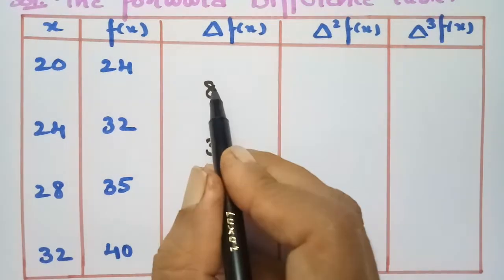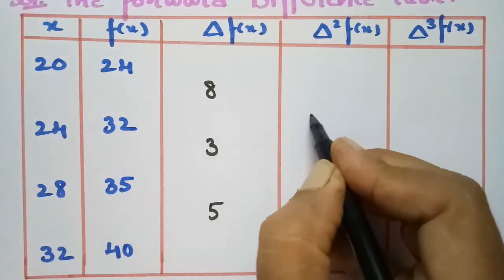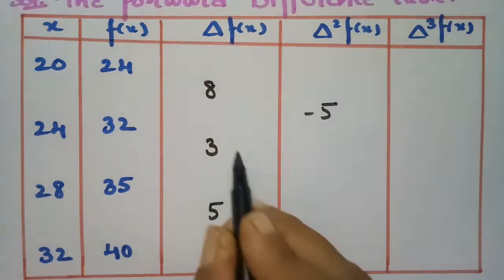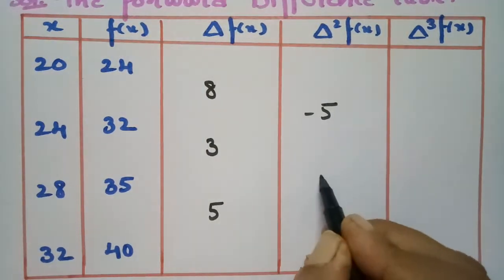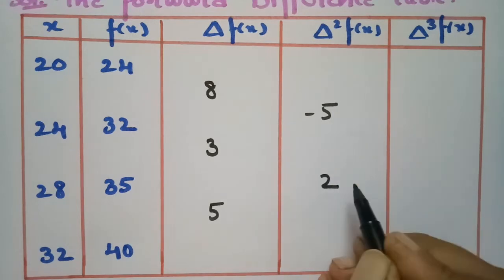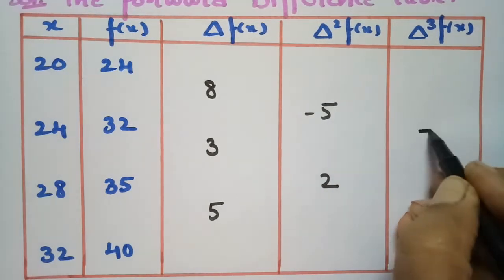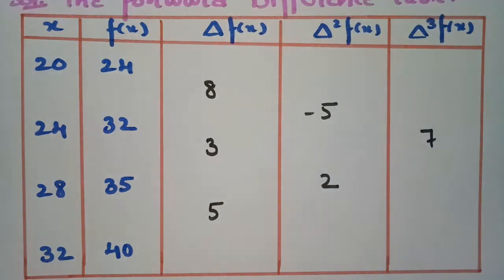For the second differences: 3 minus 8 gives minus 5, and 5 minus 3 gives 2. For the third difference: 2 minus (minus 5) gives 7.